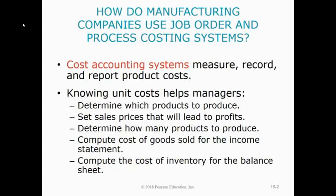There are different types of cost accounting systems and what makes them different is the particulars, but overall they all do the same thing. They measure, they record, and they report product costs, which are your inventoryable costs for direct materials, labor, and overhead for the period. They help break it down on the whole — this is what we incurred in total product costs — but also to the unit level, showing what each unit that we manufacture costs us.